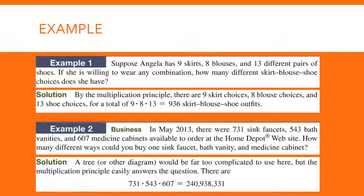Example two: you have 731 sink faucets, 543 bath vanities, and 607 medicine cabinets. That gives you a total of 240,938,331 possible combinations of those three items.